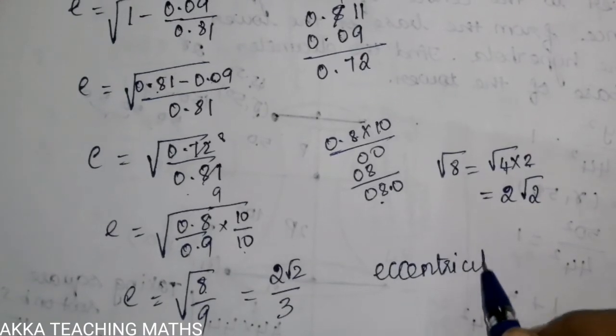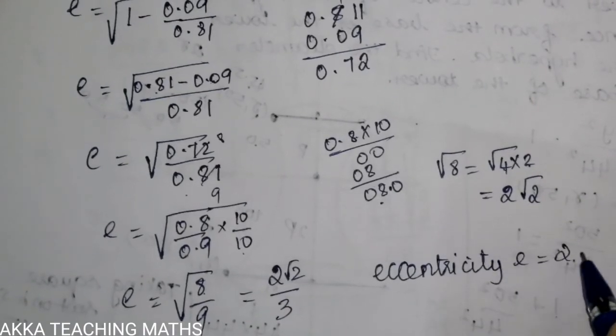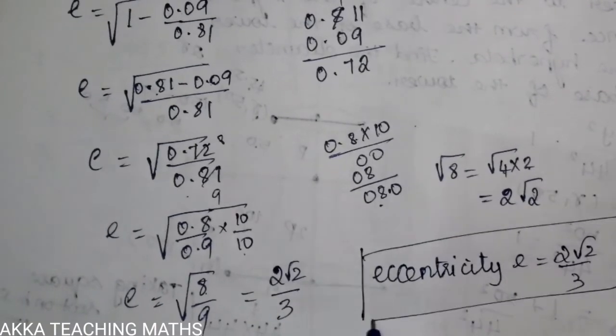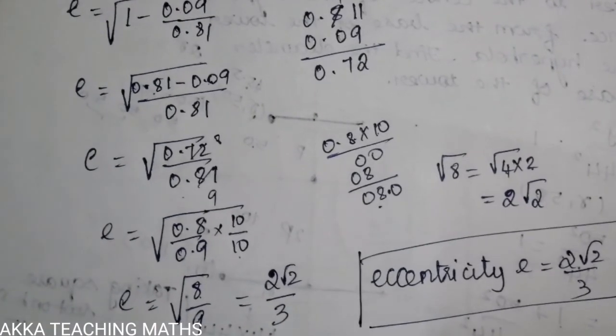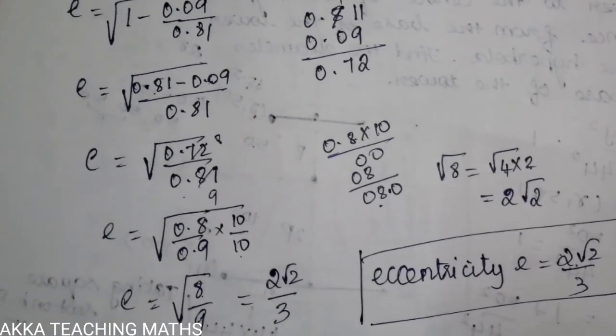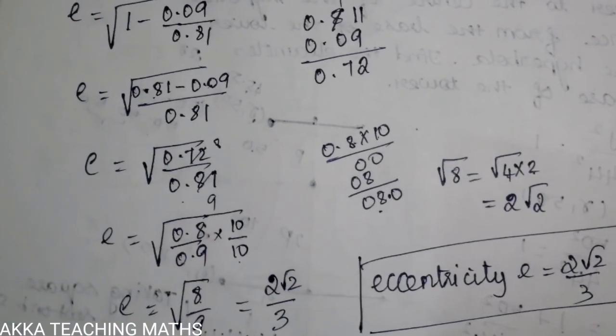Eccentricity e equals 2√2 divided by 3. This is the final answer. Thank you for watching.